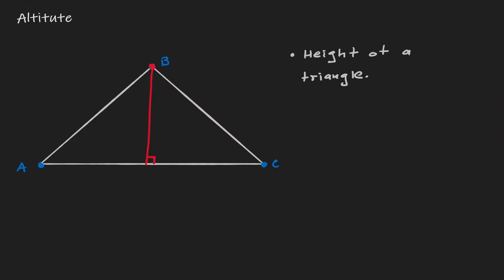But let's think about why does this line have to be perpendicular. Well, if it's the height of a triangle, then this is definitely a length or some kind of a distance. So what we're trying to do here is we are trying to find the distance between a point and a line. And we have said previously that in order to define the distance between a point and a line, this distance should be of a perpendicular line. So this is the reason as to why this line has to be perpendicular to the opposite side.